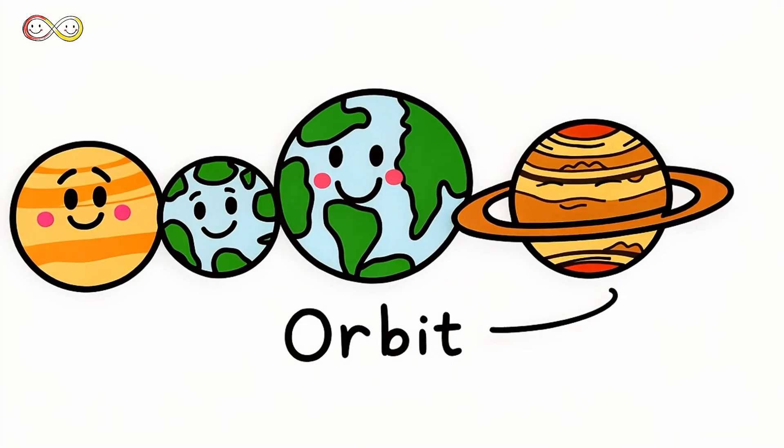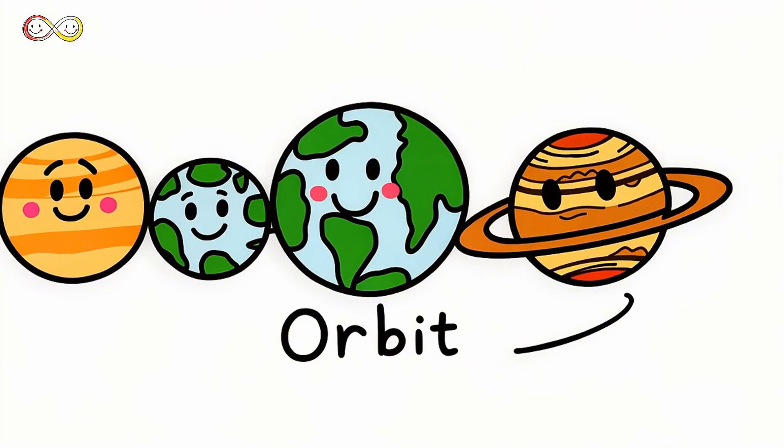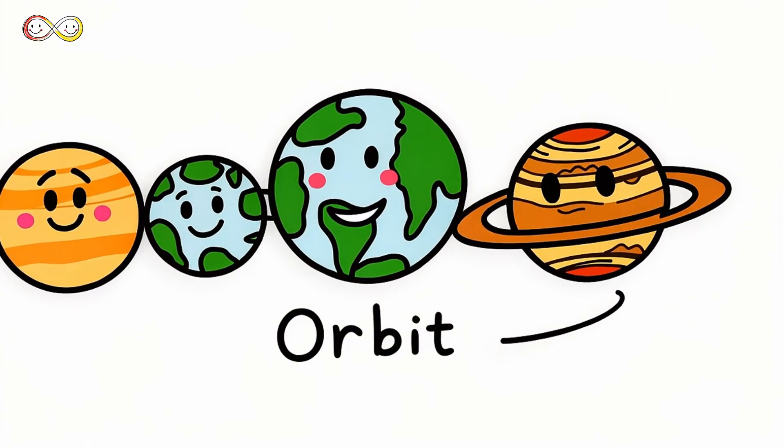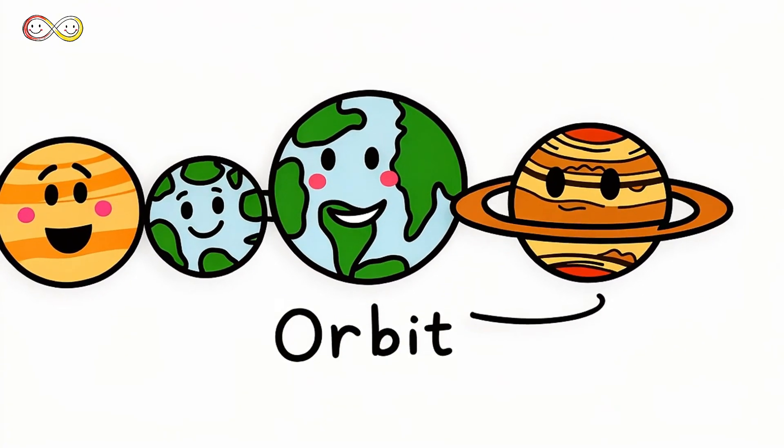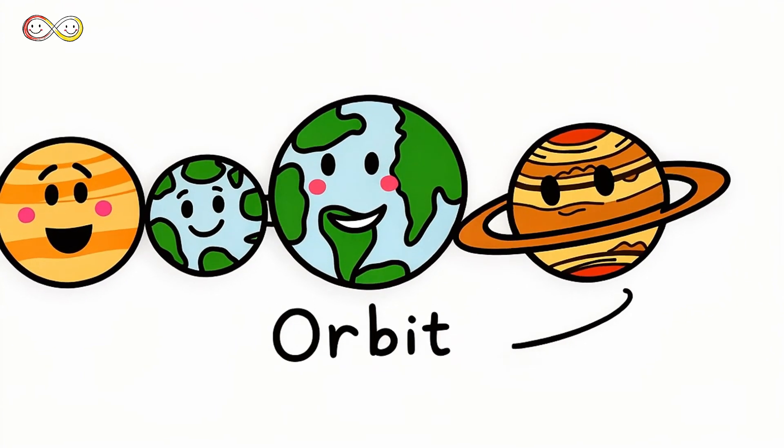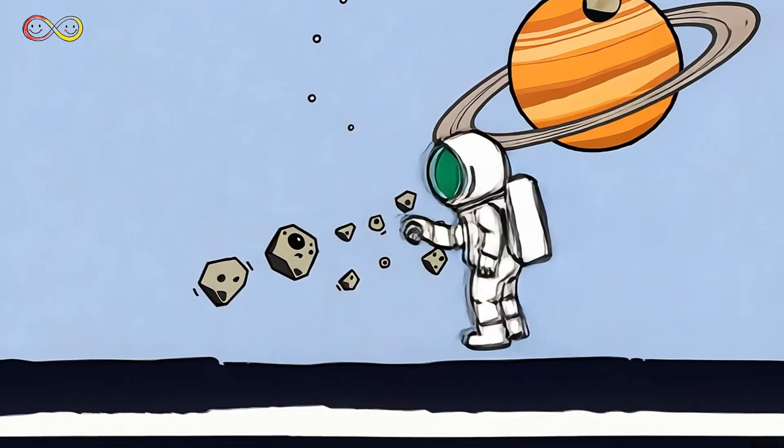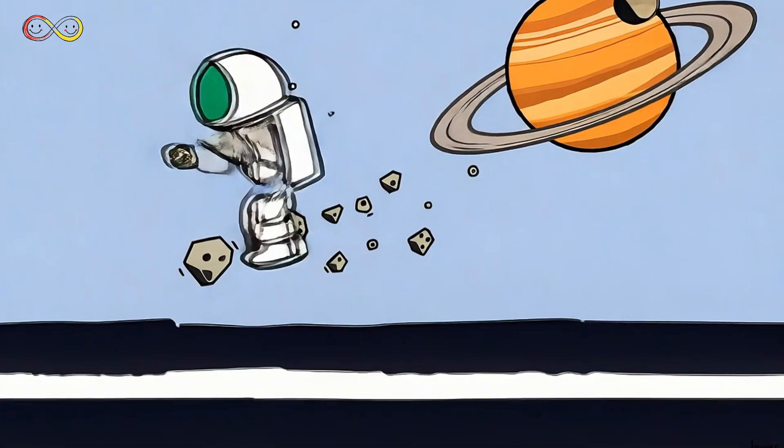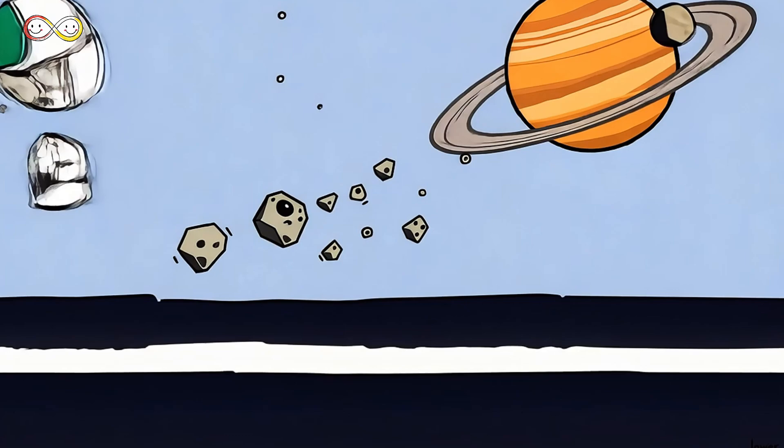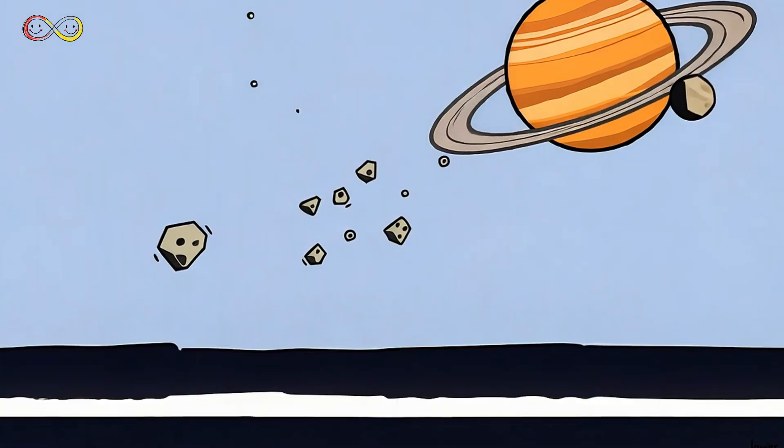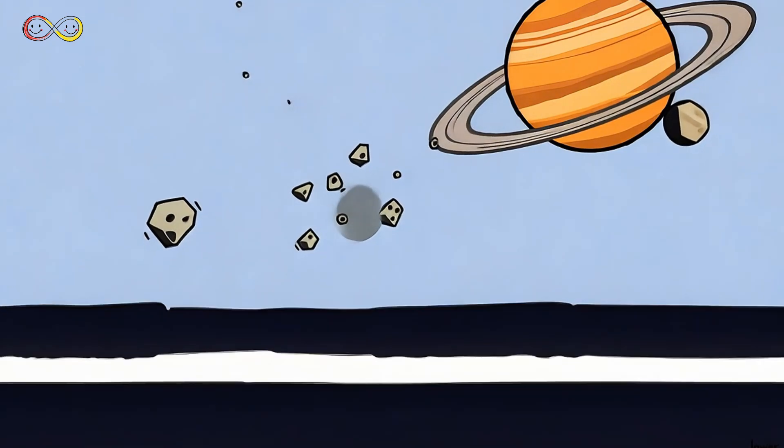Planets are another kind of celestial body. Some, like Jupiter, are massive. Others, like Mercury, are tiny. They all orbit the sun, each moving on its own special path called an orbit. Planets aren't alone in space. Many have moons that orbit them. Earth has just one, but Jupiter has over 90. There are also asteroids, which are like tiny rocky planets. These space rocks float between planets, forming the asteroid belt.